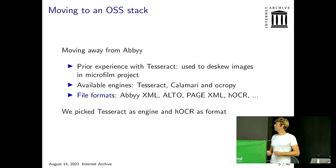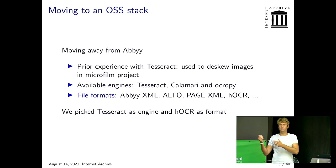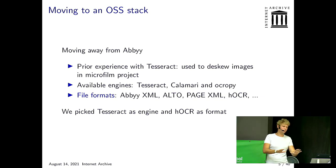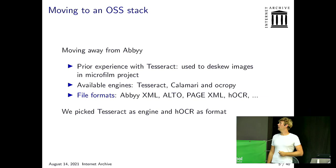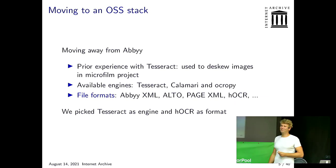I had prior experience with Tesseract, which is one of the main OCR engines. I used it in another project where we deskewed images uploaded to our website — people uploaded microfilm, where pages were sometimes a bit turned, and I used Tesseract to find all the text and then straighten it up. I already found that Tesseract was quite powerful there. There are a couple of other available engines: Calamari and Ocropus, and there's a large set of different result file formats.